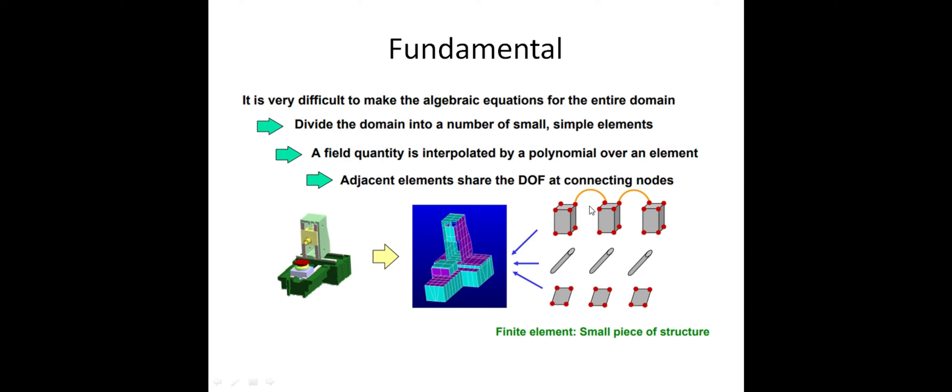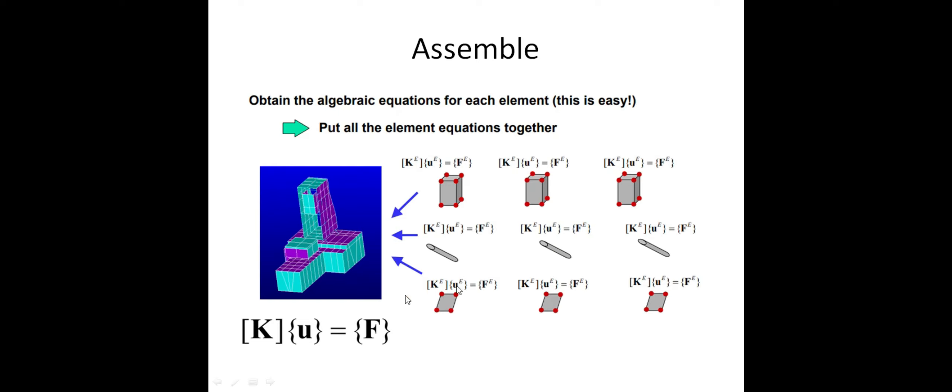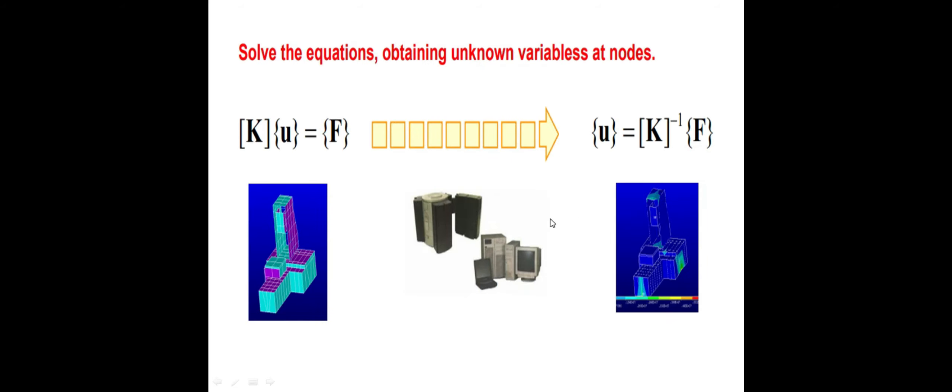Finally, we get a global forces equal to global stiffness matrix into total displacement — like F = K × U for first element, second element assembled together. We assemble all equations over the entire structure in a piece-wise fashion. After adding, we get one big assembled structure — a set of simultaneous algebraic equations at nodes. We solve it to calculate unknown displacement with help of the finite element equation F = K × U.